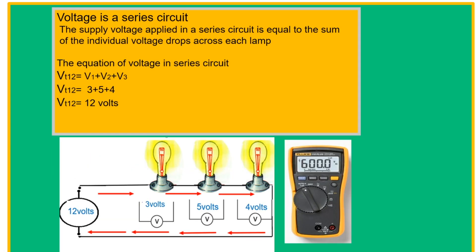Voltage in a series circuit: the supply voltage applied in a series circuit is equal to the sum of the individual voltage drops across each lamp. This is the equation of voltage in a series circuit. Vt of 12 volts equals V1 plus V2 plus V3. Simply add the voltage drop of each lamp to get the total voltage.